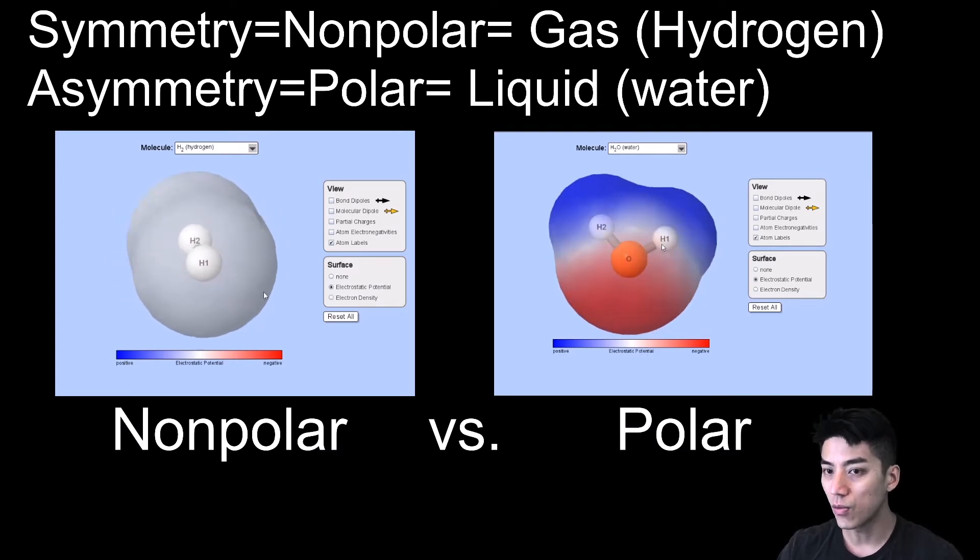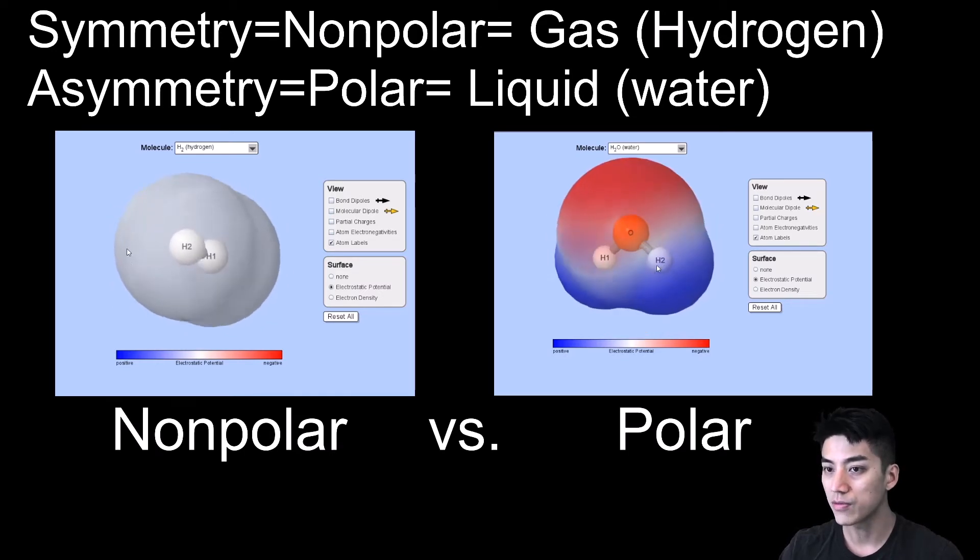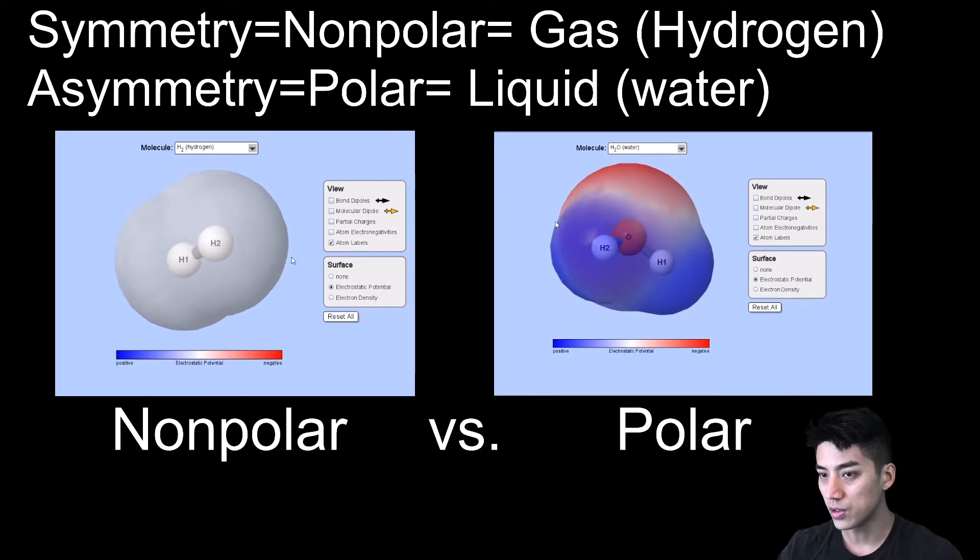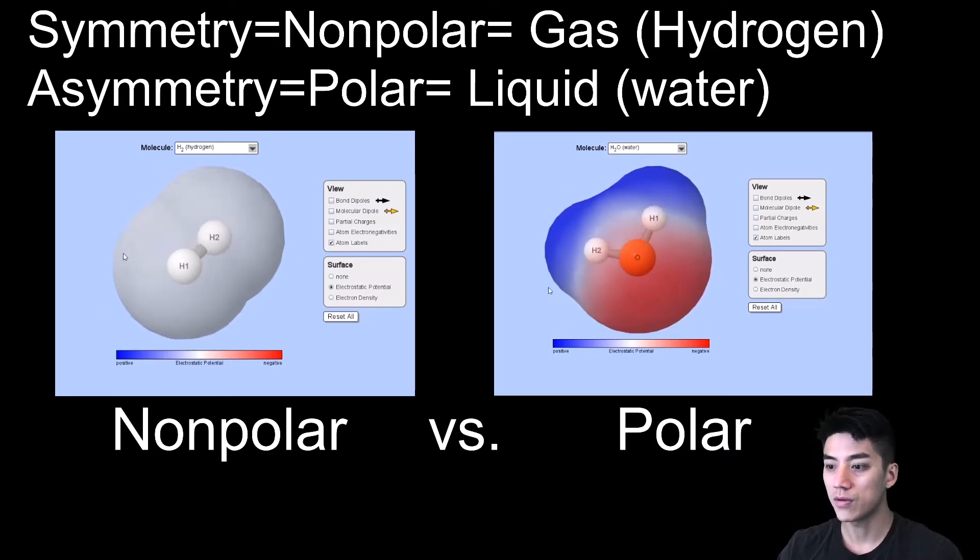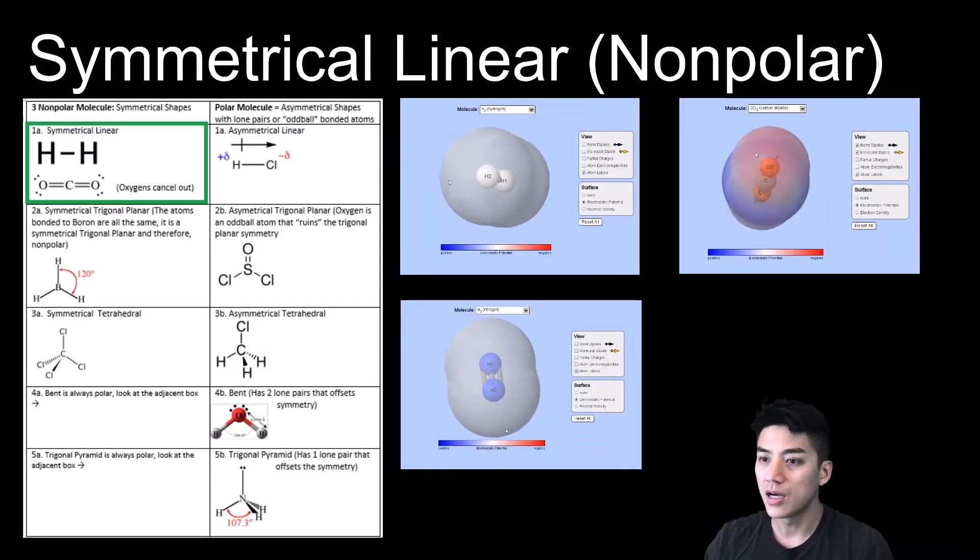On the other hand you have water, which is asymmetrical. So there's this unequal sharing of electrons. You can see there's a color difference, there's a blue and a red region, which makes it polar. And because it's polar, it will make water a liquid at room temperature, which it is.